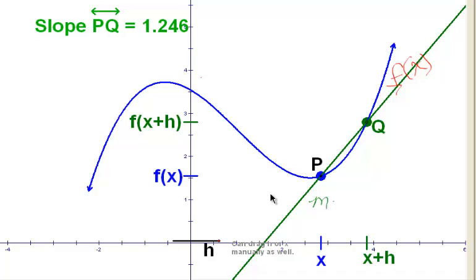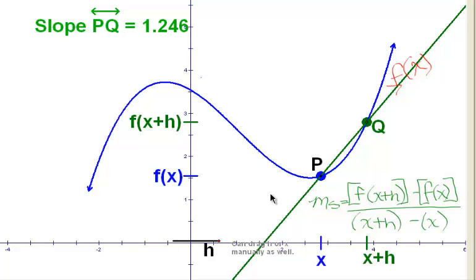So the slope of the secant line through P and Q is the difference in the outputs, there's the output at Q, and the output at P. That is y2 minus y1. That's going to be over the difference in the inputs of those functions. That's x2 minus x1. That will give us rise over run. That will give us the slope of this line. Well, why do we care?